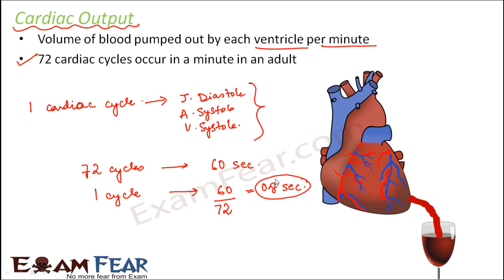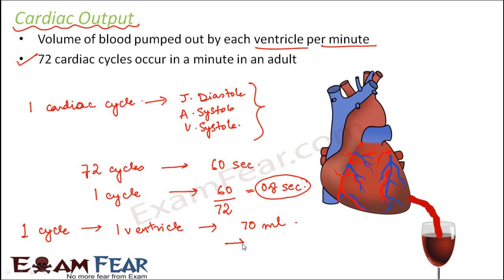It has been observed that in one cycle, one ventricle pumps out around 70 milliliters of blood. So cardiac output equals 72 multiplied by 70, which is approximately 5 liters. In a healthy adult, 5 liters of blood will be pumped out by the ventricles in one minute.